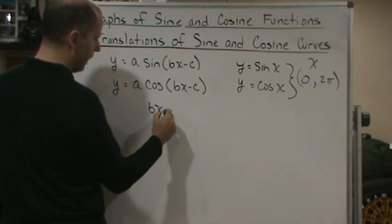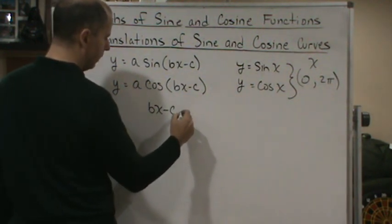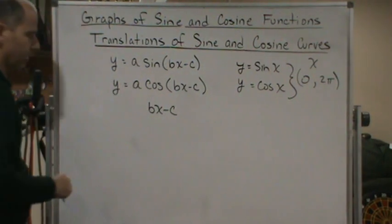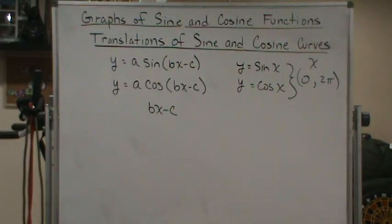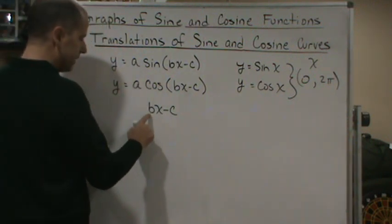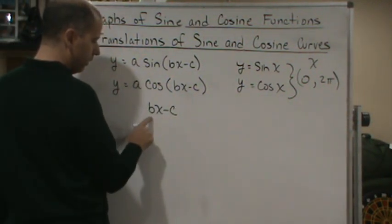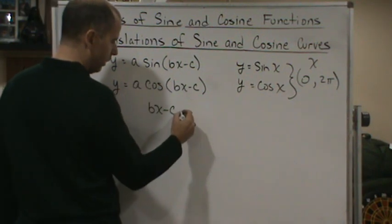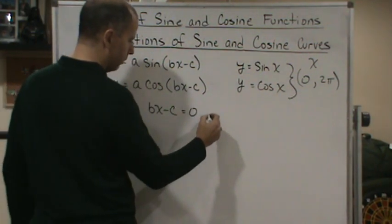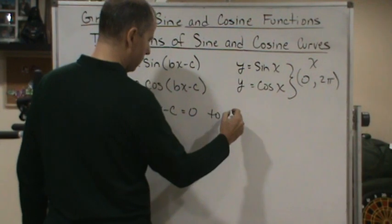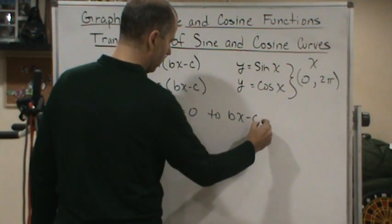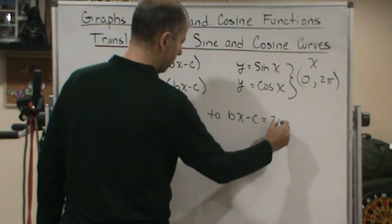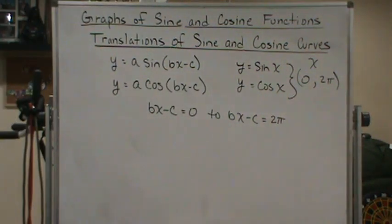when b times x minus c goes from zero to two pi, it completes one cycle as this expression goes from zero to two pi.